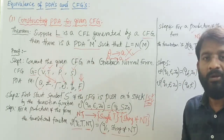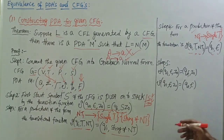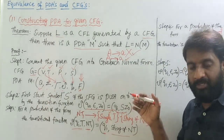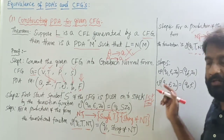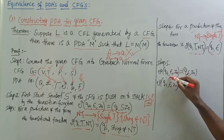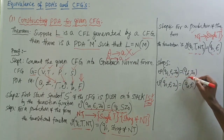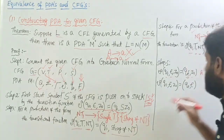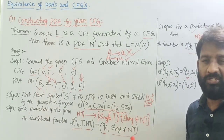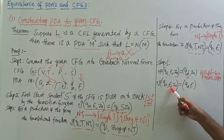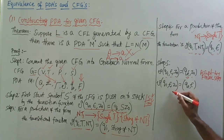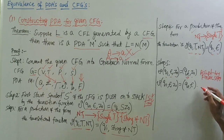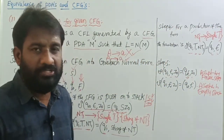Finally, if you want to accept by final state or by empty stack, we add two transitions. Acceptance by final state: delta(q1, epsilon, Z-naught) = (qf, Z-naught). Acceptance by empty stack: delta(q1, epsilon, Z-naught) = (q1, epsilon), meaning we remove the top symbol from the stack by doing a pop operation. Now let's discuss this topic by taking one example.